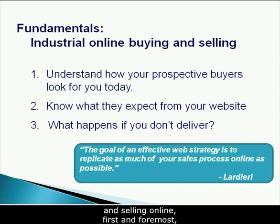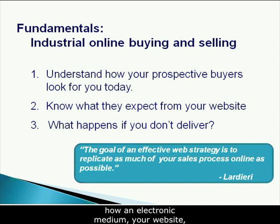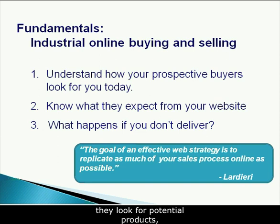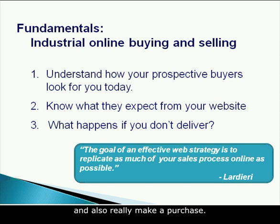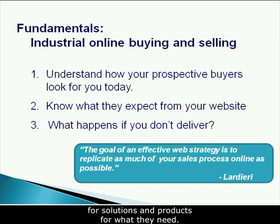When we think about industrial buying and selling online, the online buying process is not significantly different than the offline buying process. What changes is merely two factors: one is how folks get information, and secondly, how an electronic medium — your website — replaces what would normally be done by a human, either a salesperson or a marketing person. Think about the steps of the sale: a customer identifies a need, looks for potential products and suppliers, vets through those suppliers, develops a short list, goes through negotiations on pricing and terms, and ultimately makes a purchase. All of that can be conducted online.